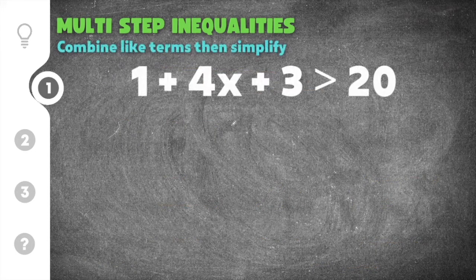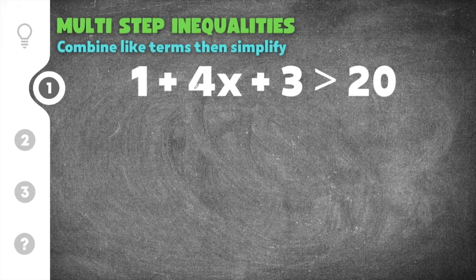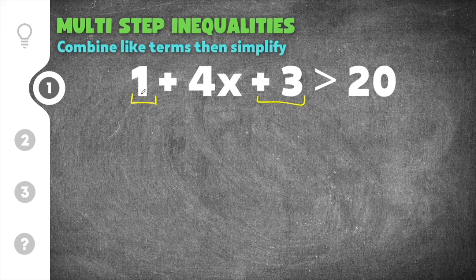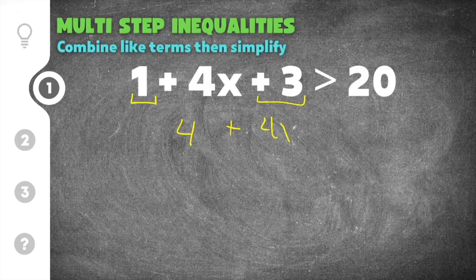Let's get started on our first practice problem on multi-step inequalities. This problem gives us 1 plus 4x plus 3 is greater than 20. The first step we're going to have to do is combine like terms. The like terms in this case are going to be our constants or our numbers, so we're going to combine 1 and 3. We're going to add 1 plus 3. Well 1 plus 3 is 4, so those get combined, and then we bring down the 4x and we bring down our greater than symbol and we bring down 20.